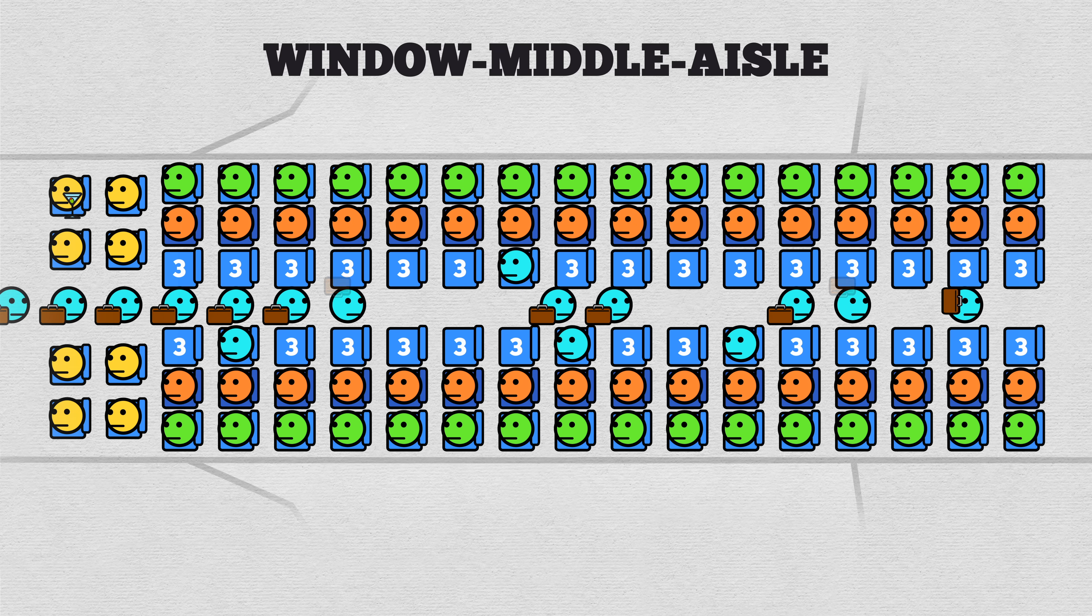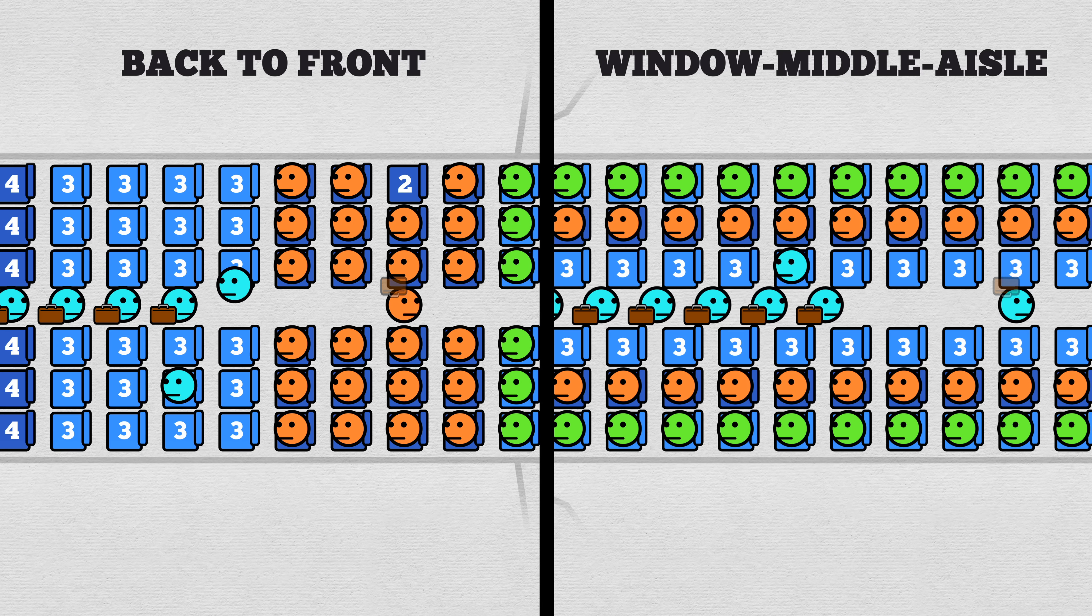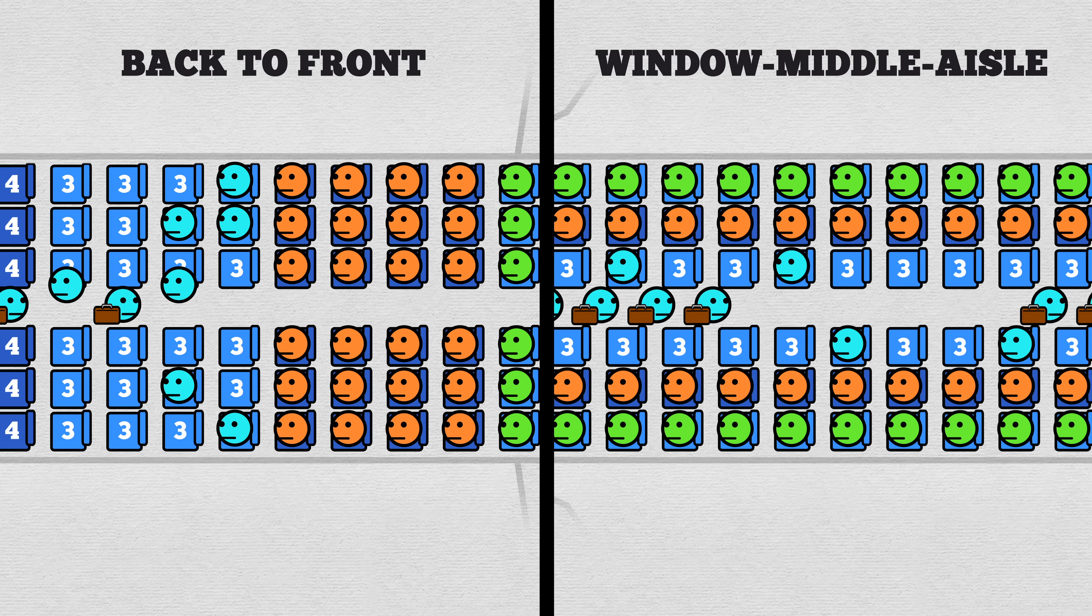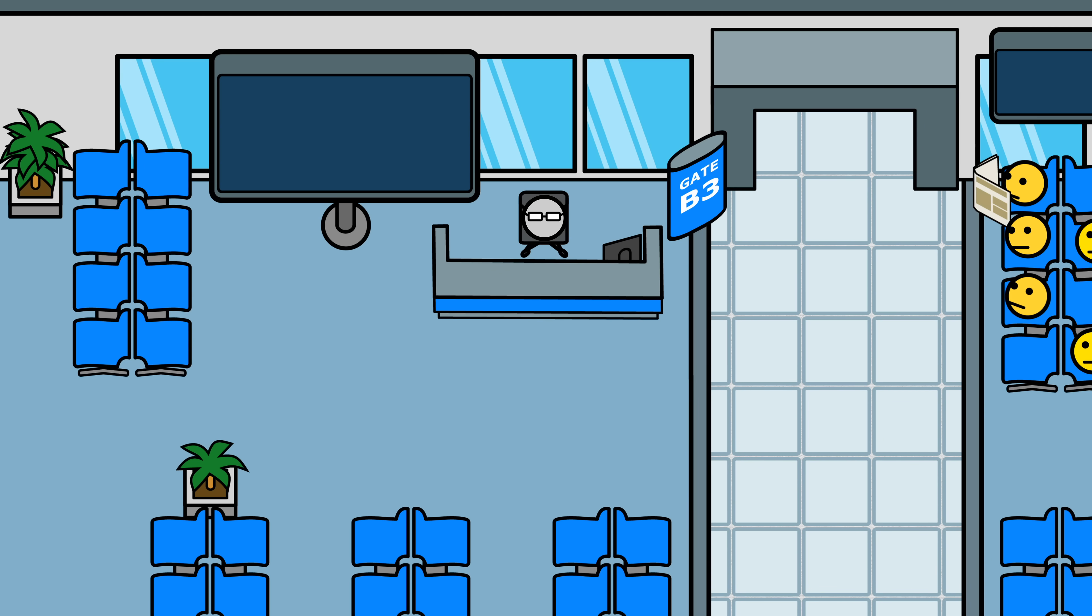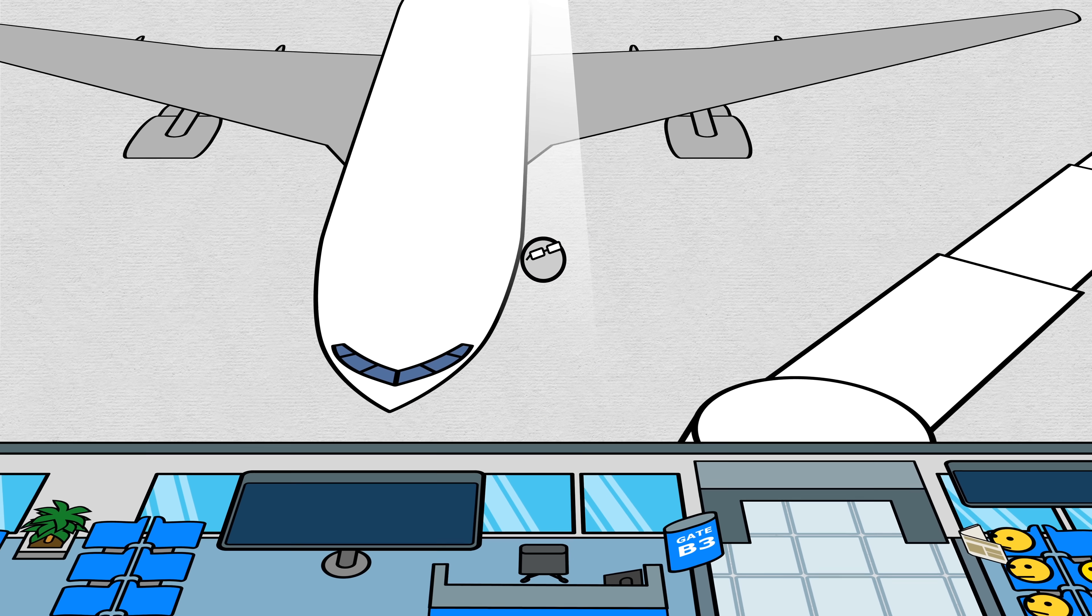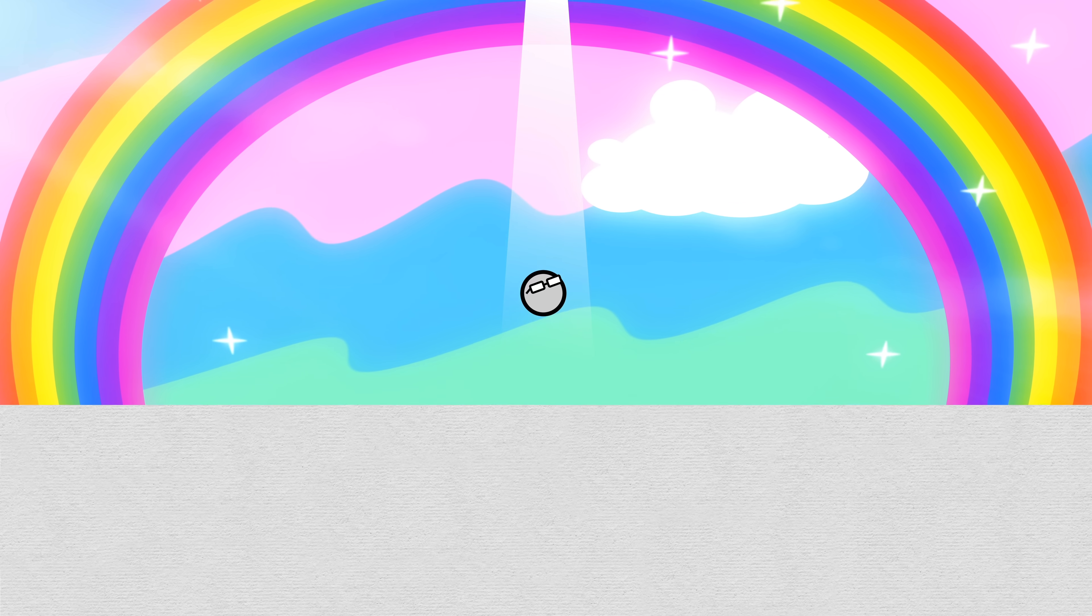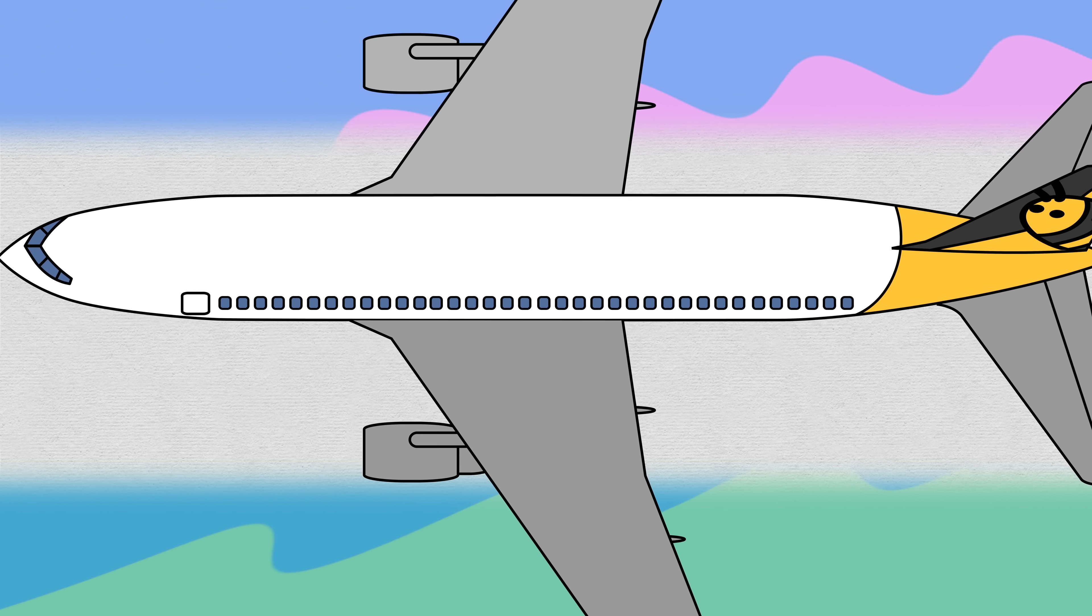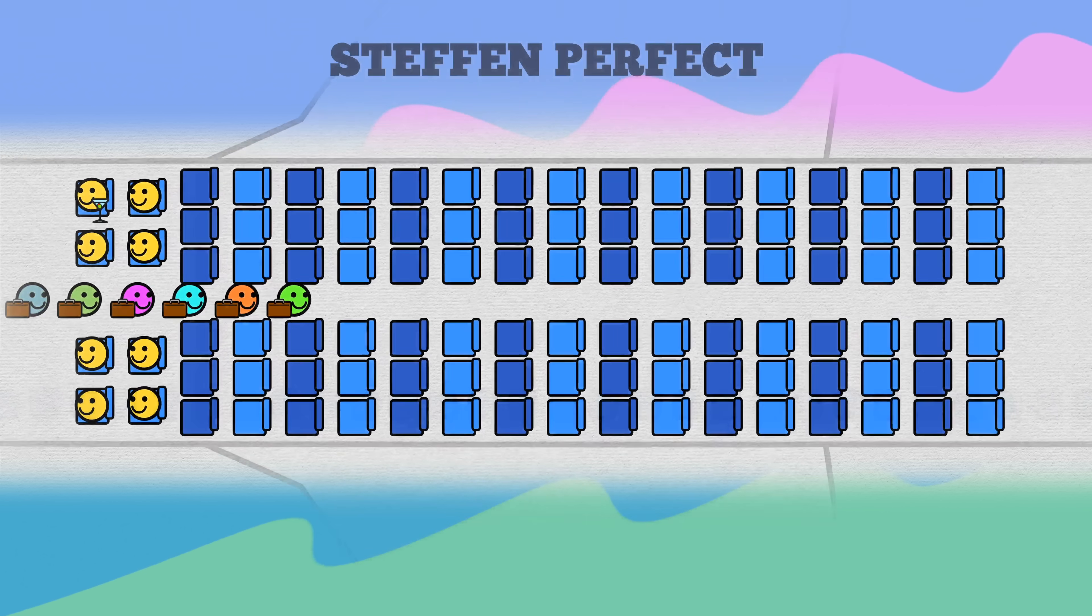The vast majority of airlines use either back to front or window middle aisle, so keep an eye out next time you're boarding a flight for which is happening to you. But can we go farther, leaving the real world with its class systems and people and untidiness and smells, ascending to the platonic plane of physics, where cows are spheres and people are cellular automaton who will execute instructions perfectly? Here in the Celestia, what is the theoretically fastest way to board a plane? On this level, here is what's possible.